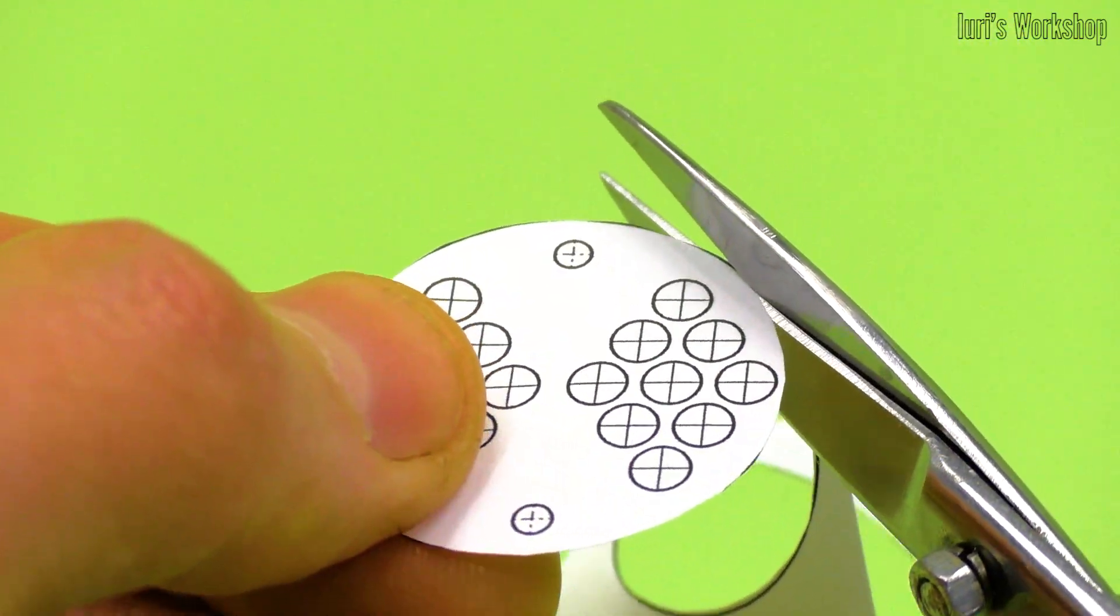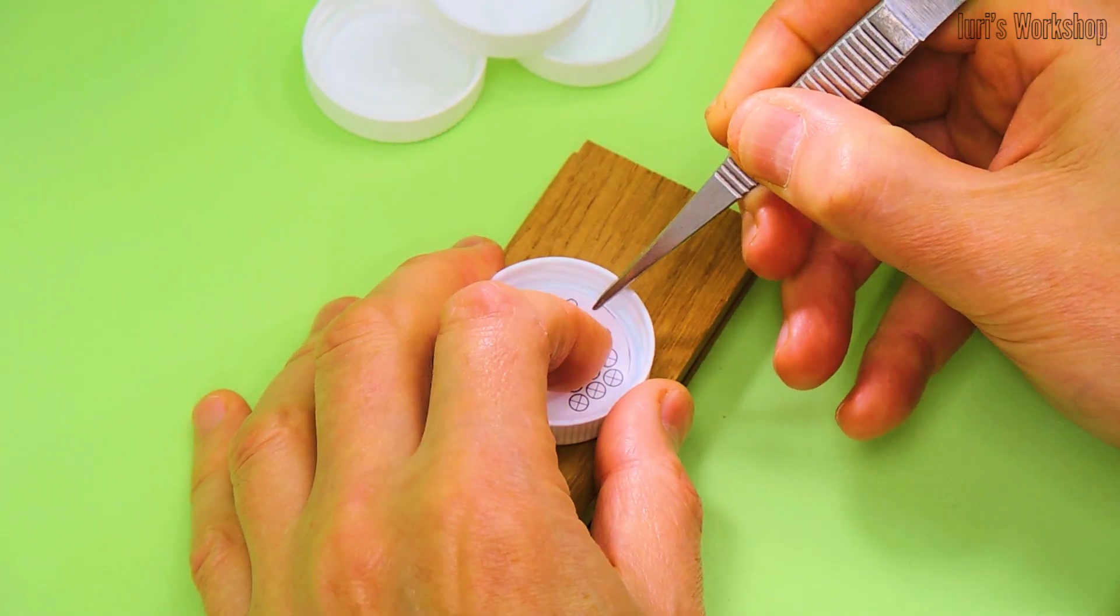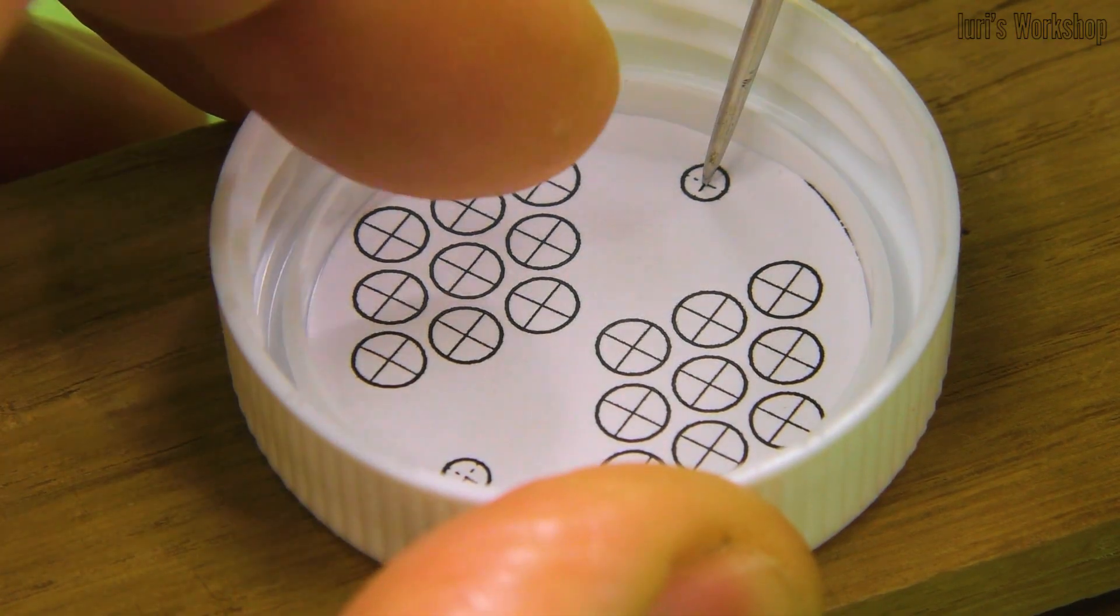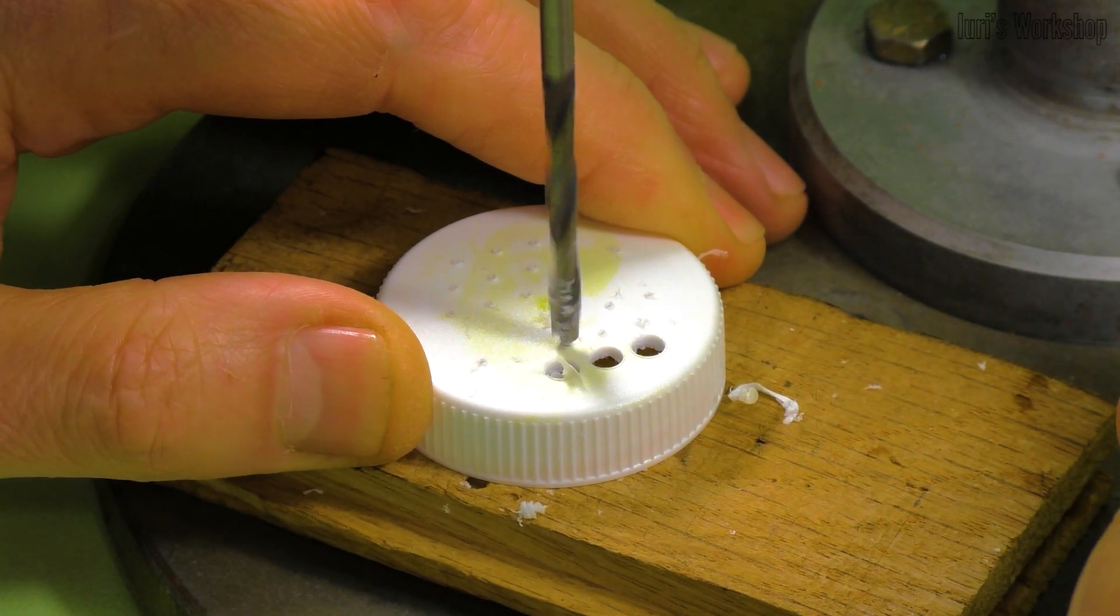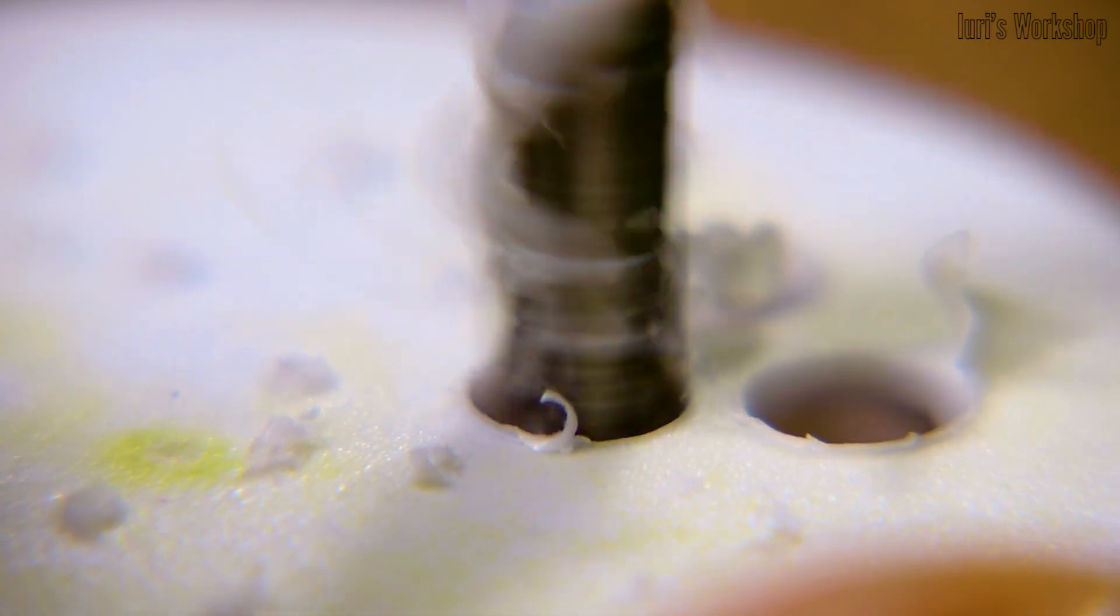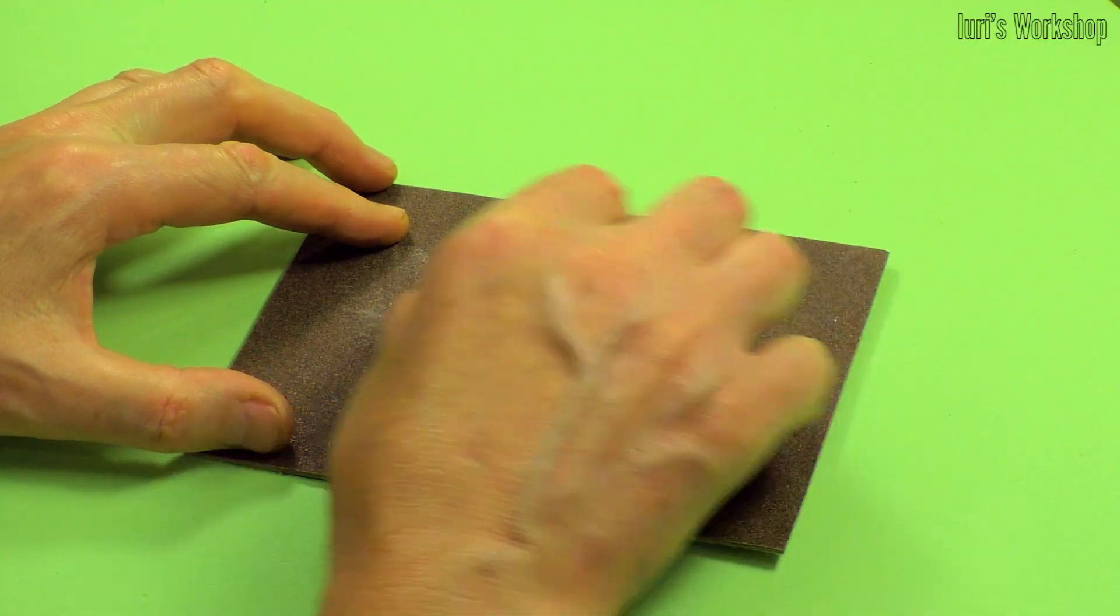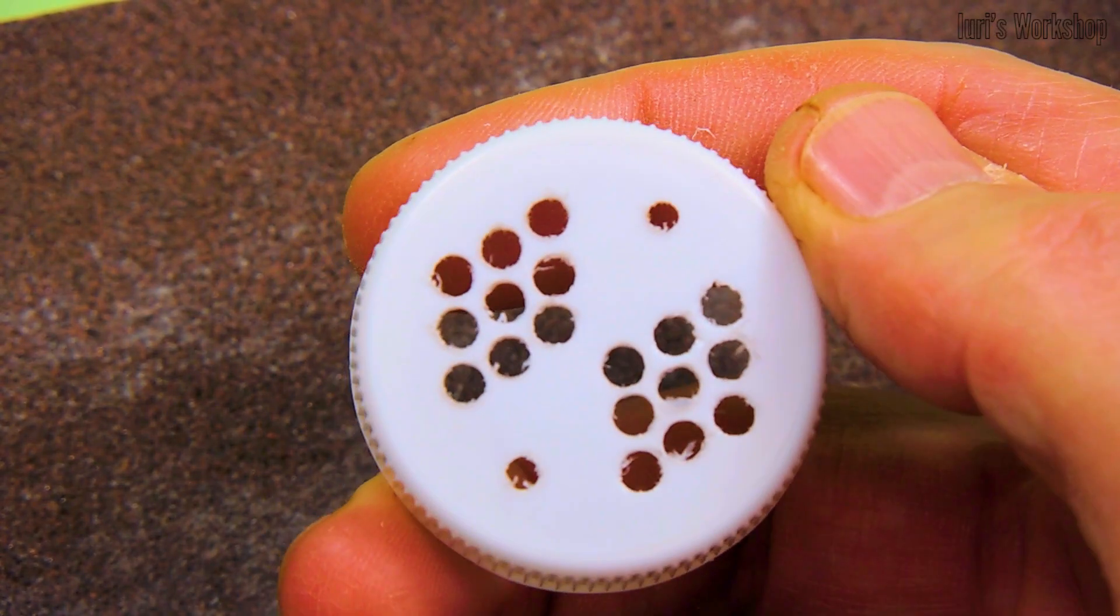I used a template from the printer to mark the holes in the milk bottle caps. You can use brad point drill bits to prevent large burrs. Even the smallest burrs should be removed though.